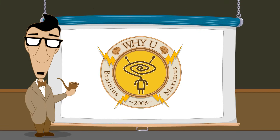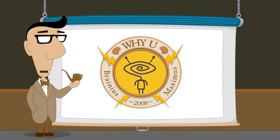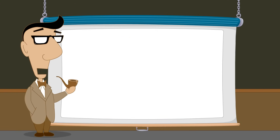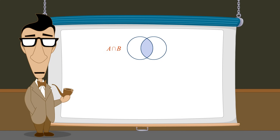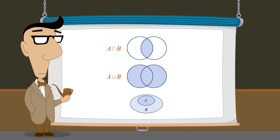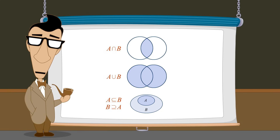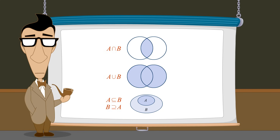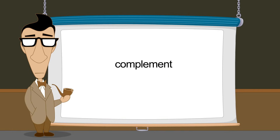Hello, I'm Professor Von Schmohawk and welcome to Why U. In the previous lecture, we used Venn diagrams to illustrate set operations such as intersections and unions, as well as relations between sets such as subsets and supersets. In this lecture, we will see how Venn diagrams can be used to illustrate the creation of a set's complement and relative complement.